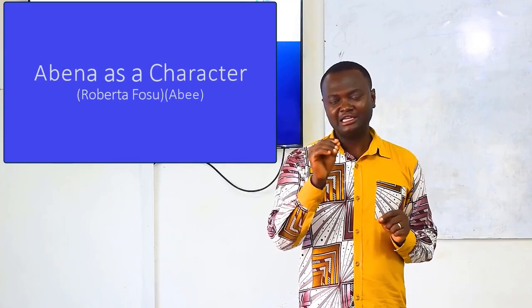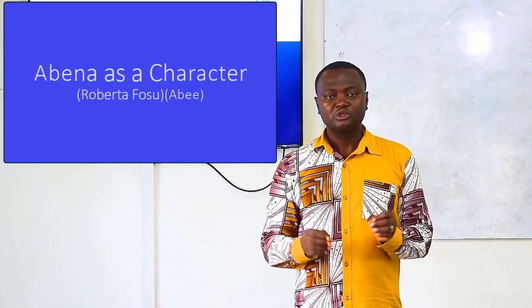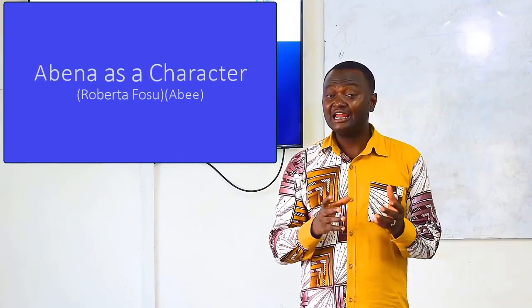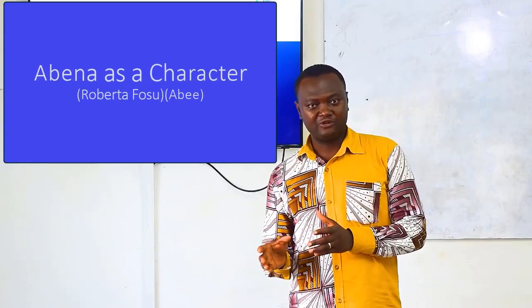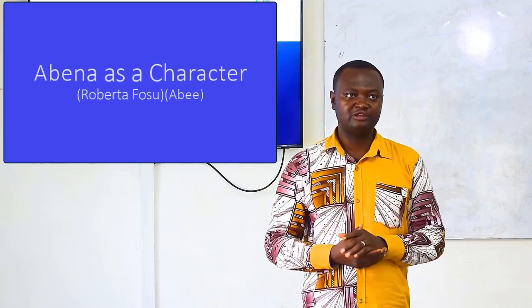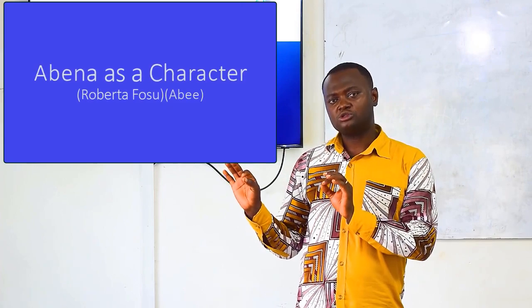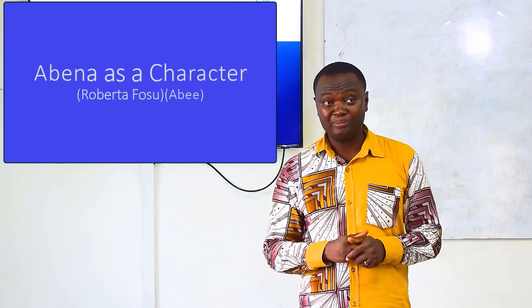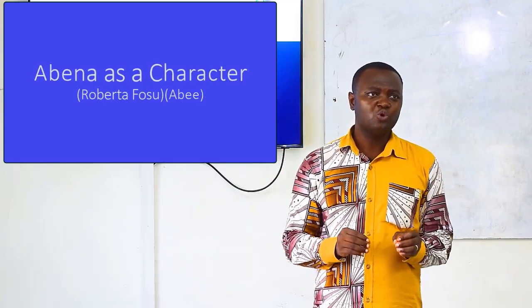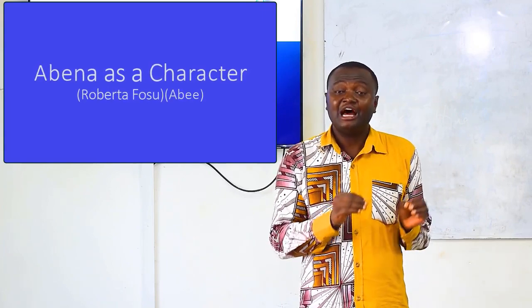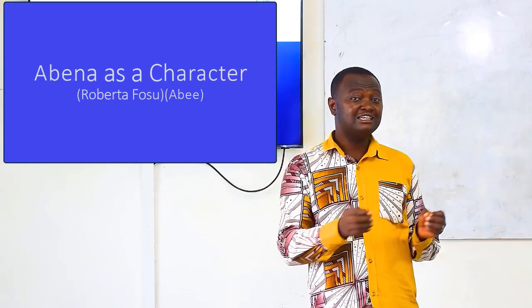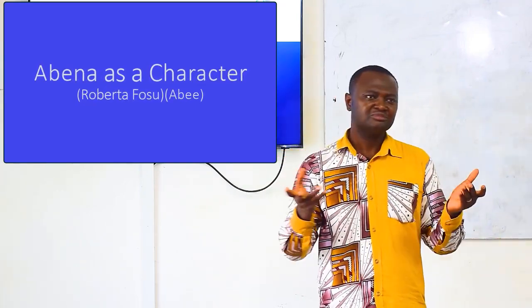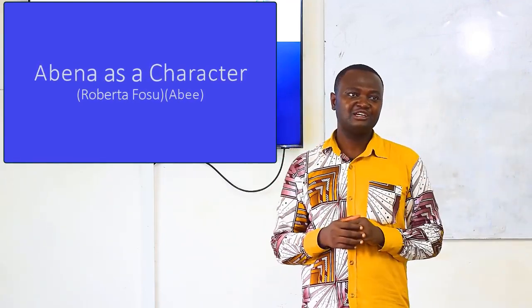Now let's talk about Abner, who is considered a major character in the novel. Abner is also called Roberta Fosu, as she was later called, and Abhi, as her father calls her. Abner is a Tuesday born — an Akan born on Tuesday. Abner is 14 years old when the story began, and the story began at Makola, a very big market in Accra. Abner has visited her Aunty Lydia at Makola for her vacation. Abner's father is a doctor who specializes in tropical medicine.